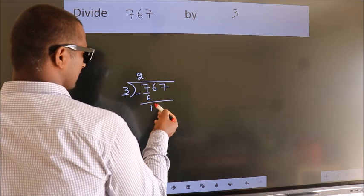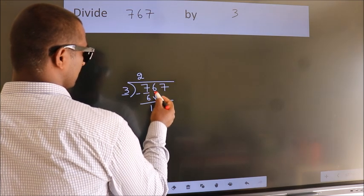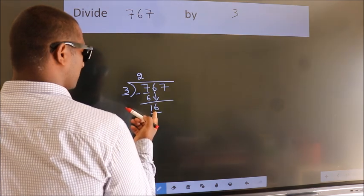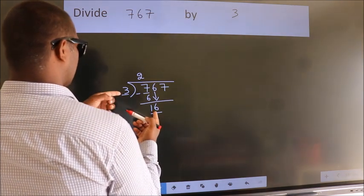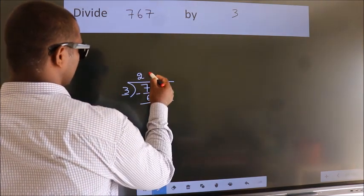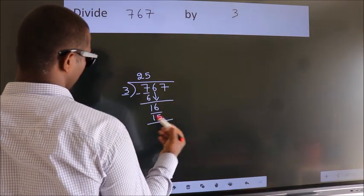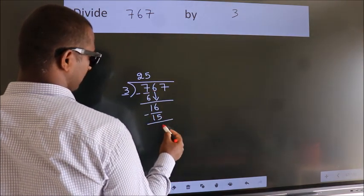After this, bring down the beside number. So 6 down. 16. A number close to 16 in the 3 table is 3 fives, 15. Now we subtract. We get 1.